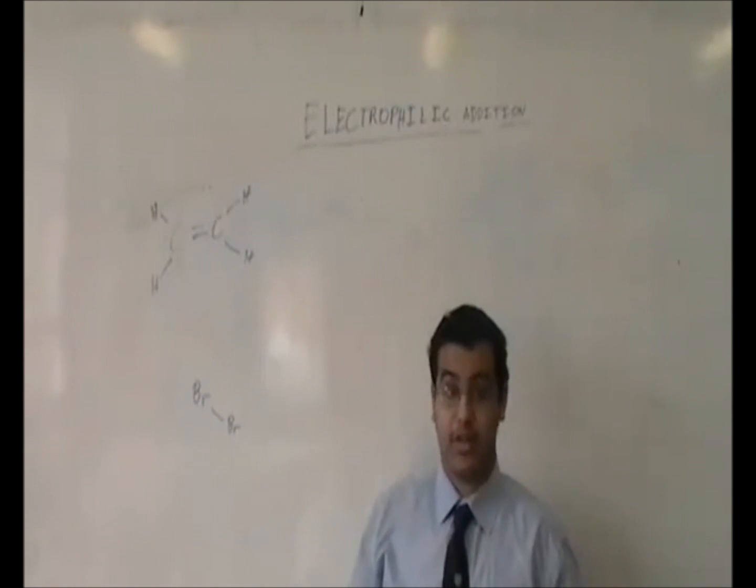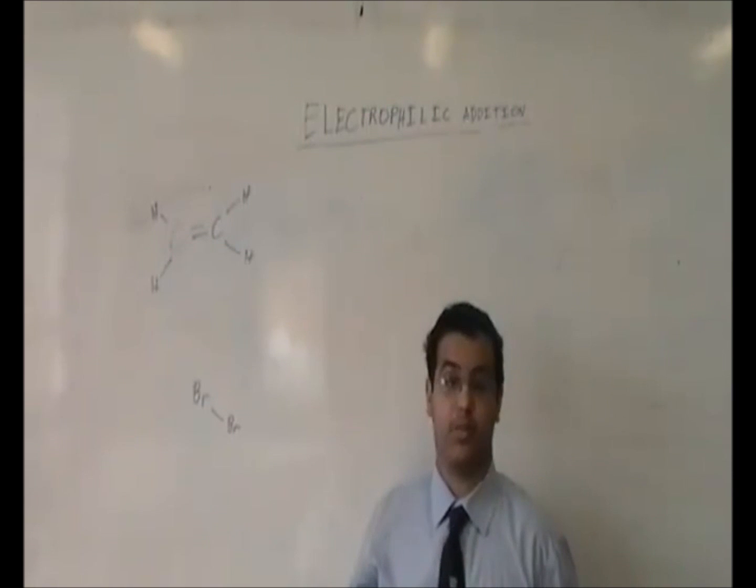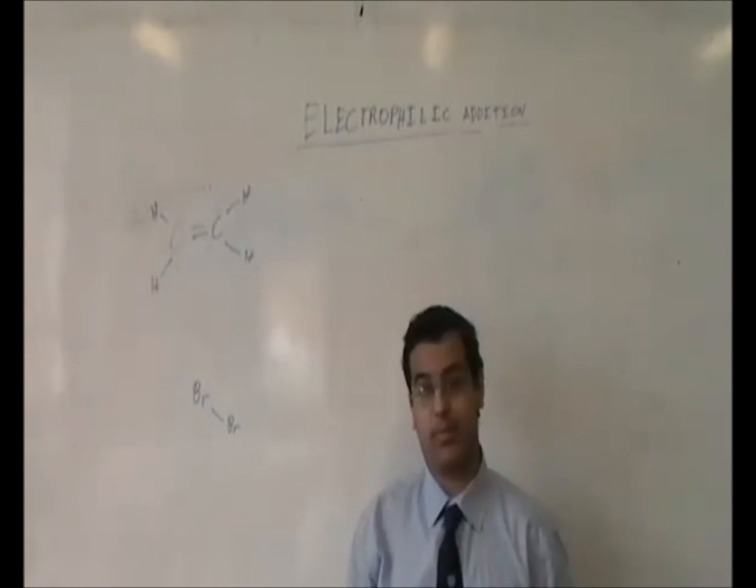An electrophile is basically an atom or an ion that is attracted to a negative centre. For example, a hydrogen ion which is positive being attracted to an electron or a negative chlorine. That would make the hydrogen ion an electrophile.